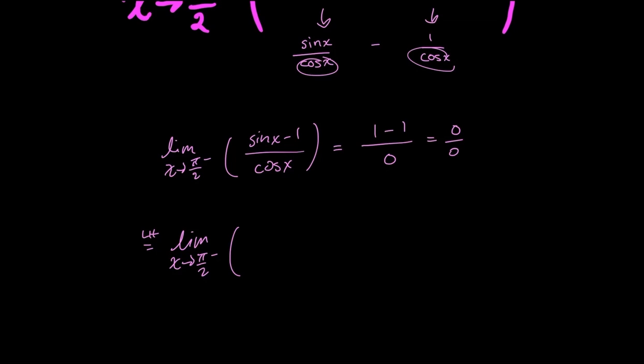the derivative of my numerator sine x minus 1, which is just cosine x, because minus 1 is a constant and goes to 0. And my denominator, taking the derivative of cosine x, gives me negative sine x.